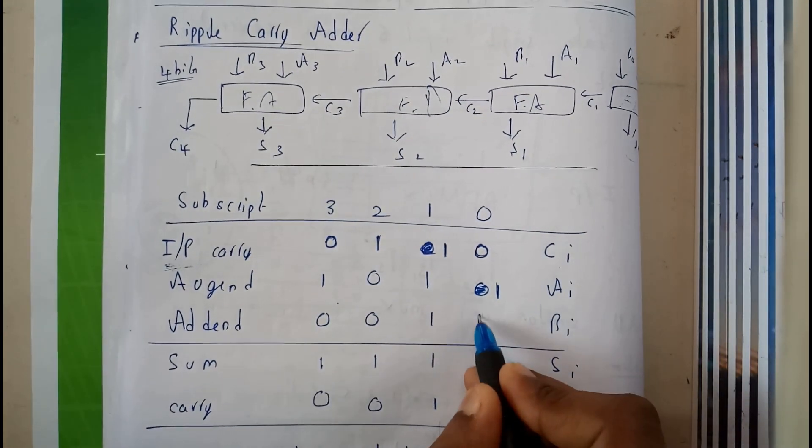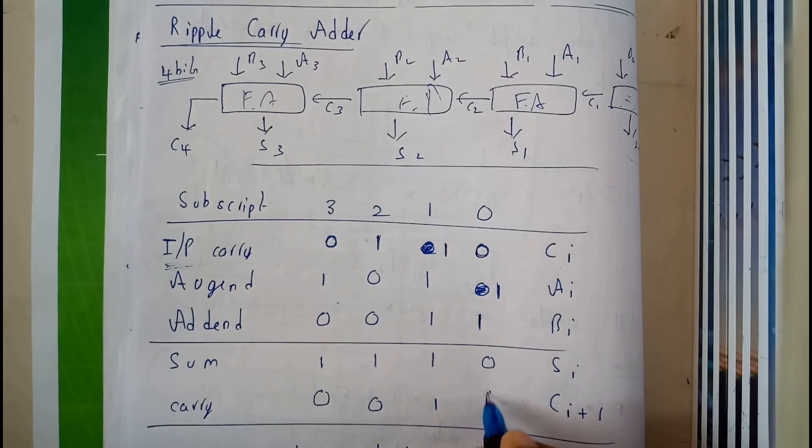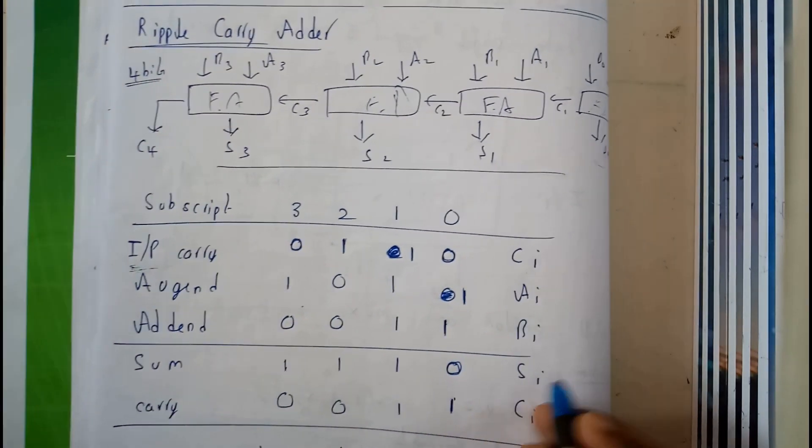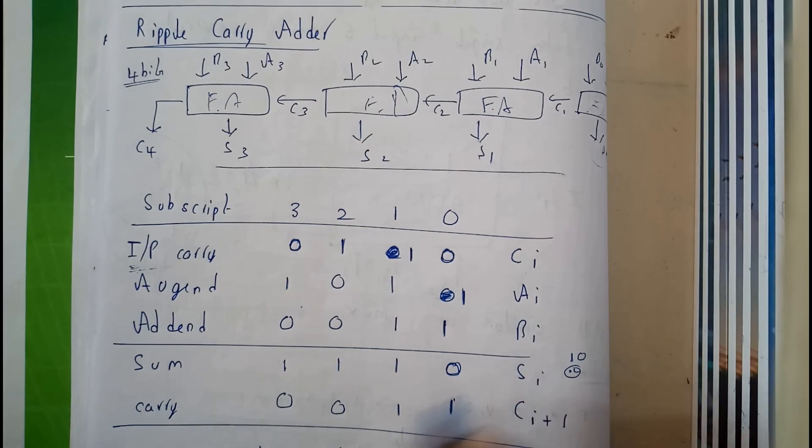So 1 plus 1 equals 2. So we will be writing down 1 0, so that it represents 1 0, that is nothing but 2.